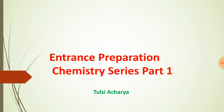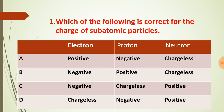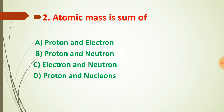Our first question is: which of the following is correct for the charge of subatomic particles? As we know, in atoms there are three different particles: electrons, protons, and neutrons. Electrons are negatively charged, protons are positively charged, and neutrons are chargeless. So option choice B is correct for question number one.